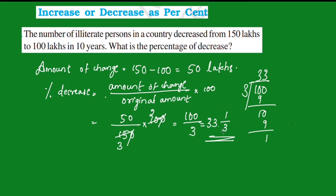So the formula for percentage increase or decrease is: amount of change divided by original amount, multiplied by 100.